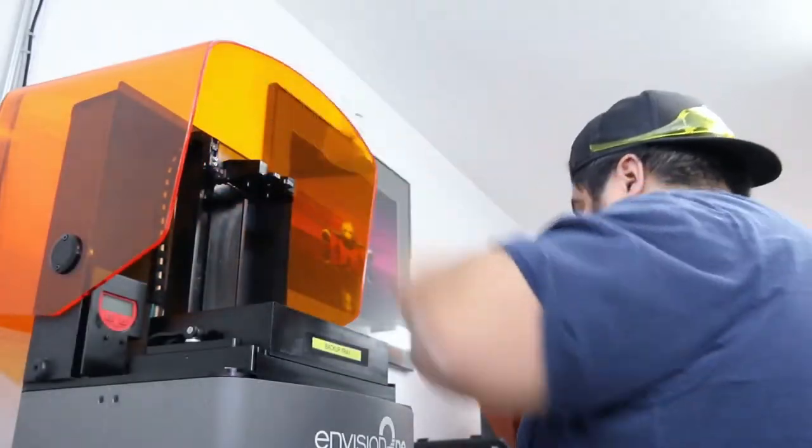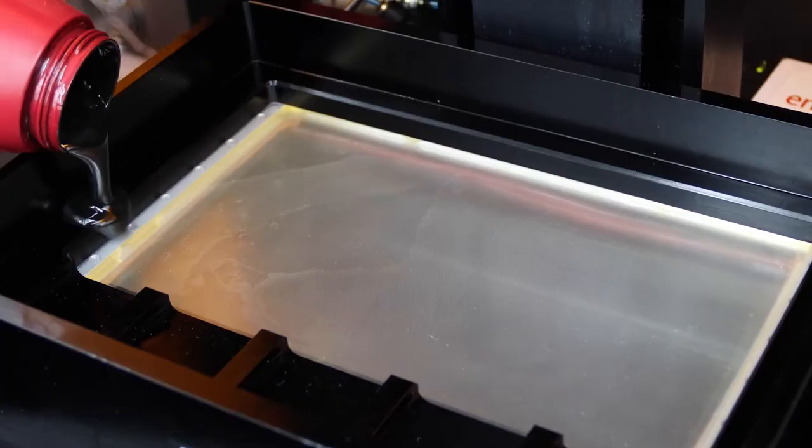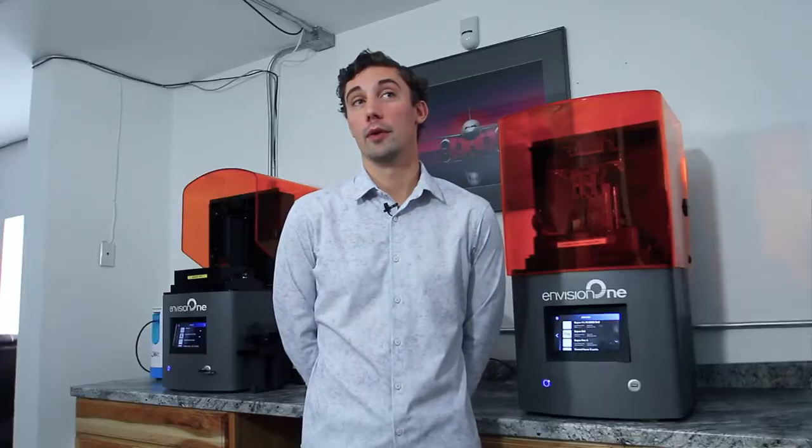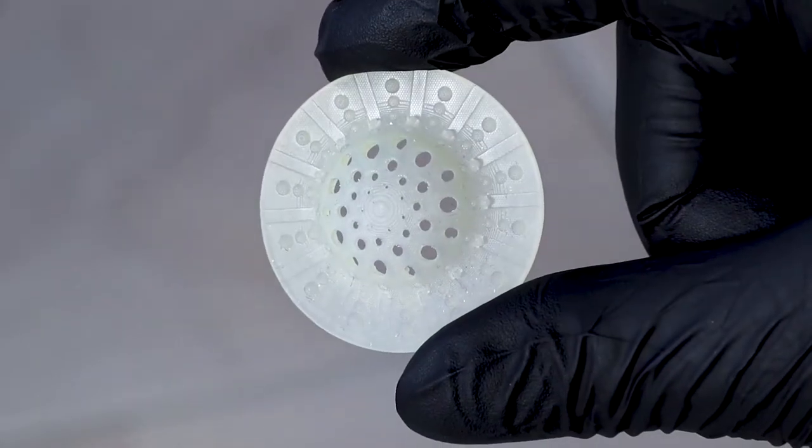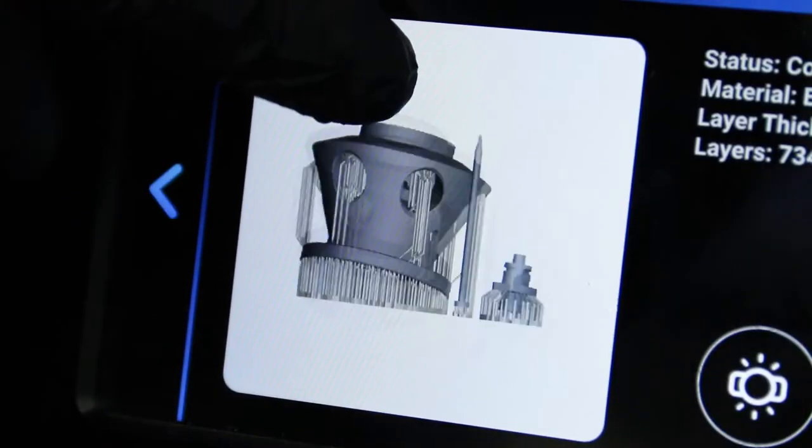The Envision 1 is a really exciting printer where we can change out materials in a relatively short amount of time. One day we produce silicone parts for our medical applications, and then the next day I can swap out the material in a matter of minutes and be running aerospace parts.